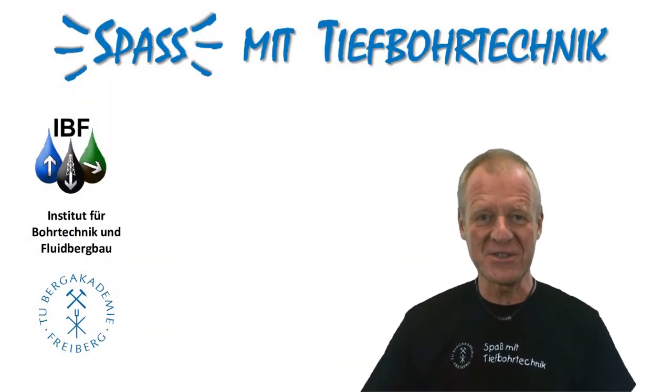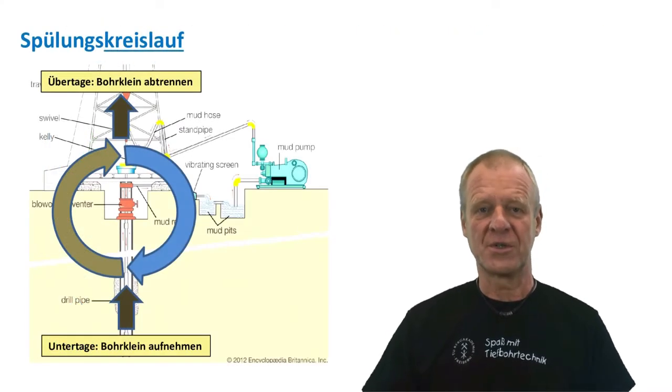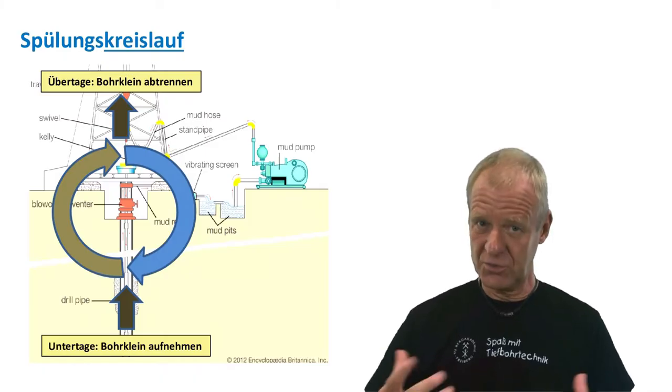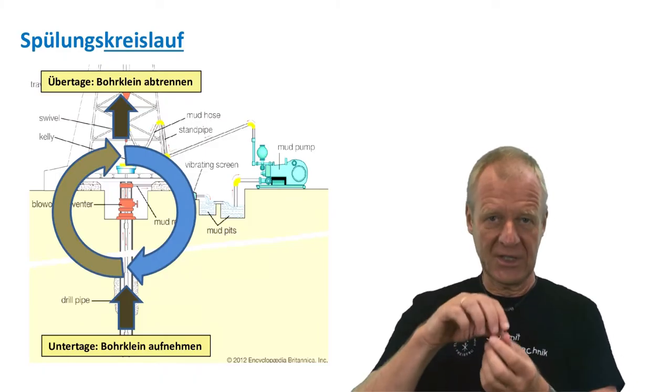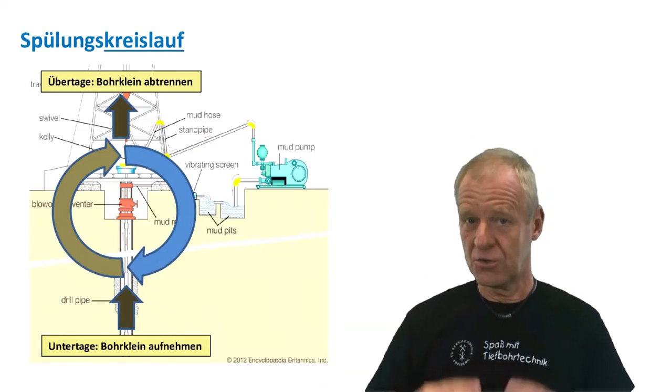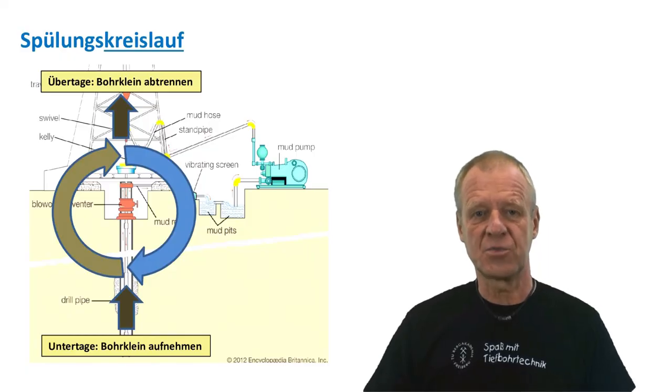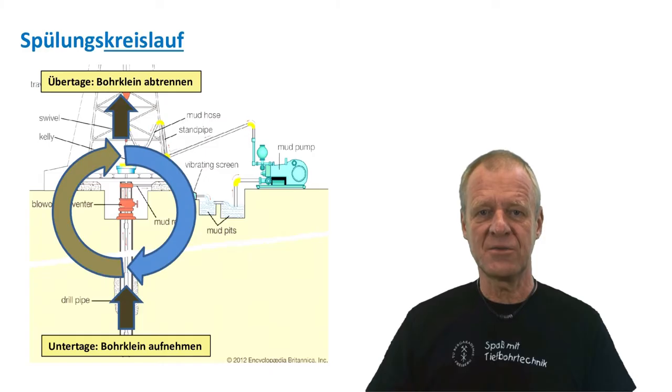Welcome to Fun with Drilling Engineering. We use a special drilling fluid to remove the cuttings out of the borehole. This drilling mud picks up the cuttings at the drill bit, carries them up the annulus between the drill pipe and the borehole wall to the surface. There the cuttings are separated from the mud so that the clean drilling mud can be pumped back through the drill string to the bottom of the borehole for the next cycle.